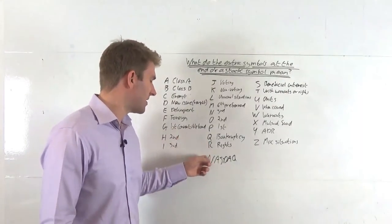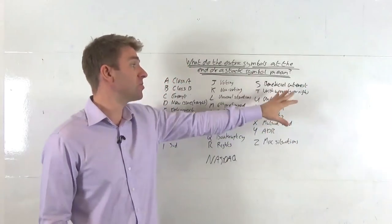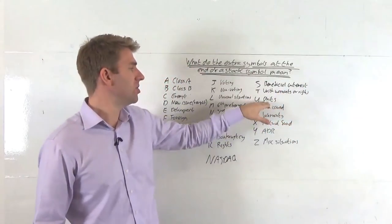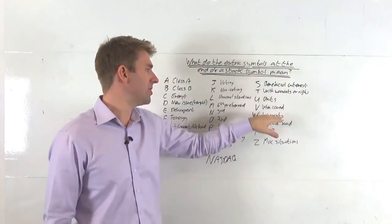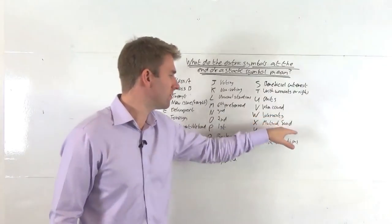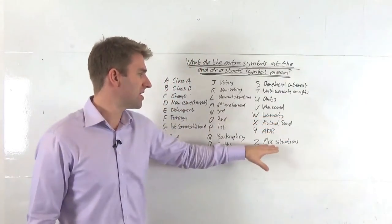R is rights. Then we've got S, which is beneficial interest. T is with warrants or rights. U is units. V is when issued. W is warrants. X is a mutual fund. Y is ADR. Z is miscellaneous situations.